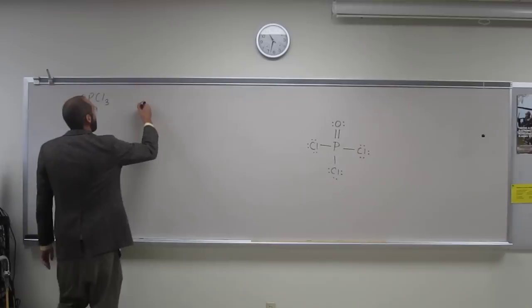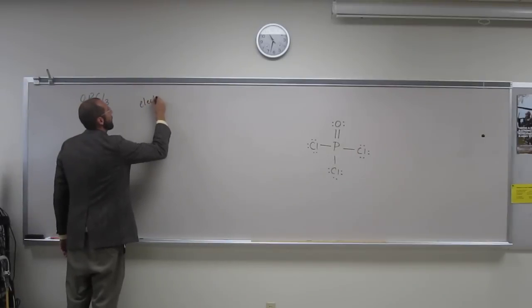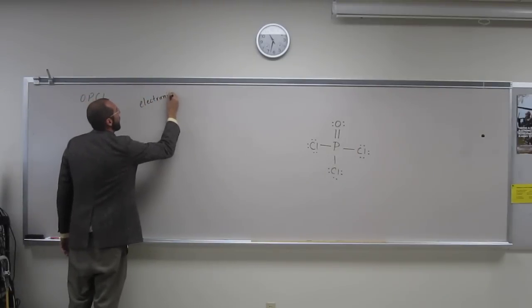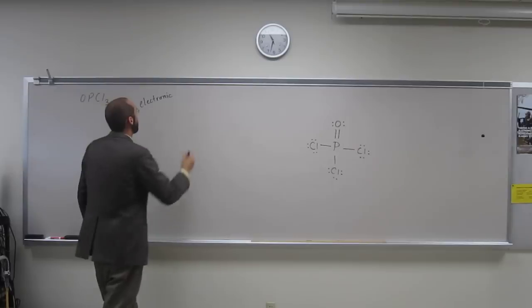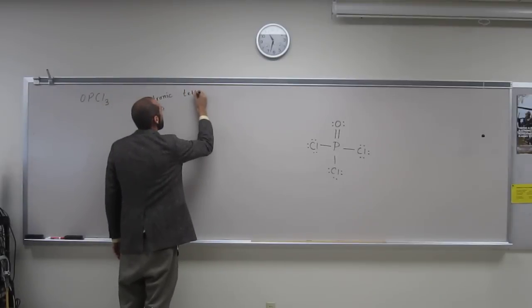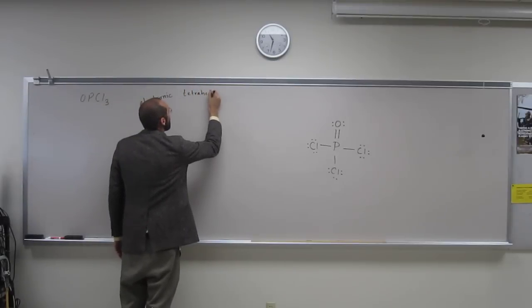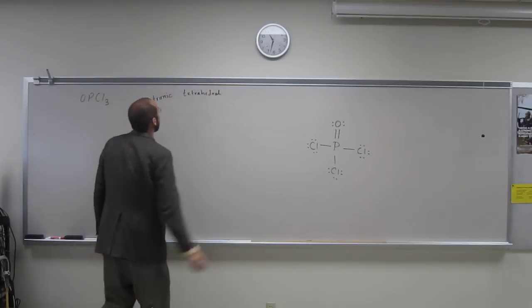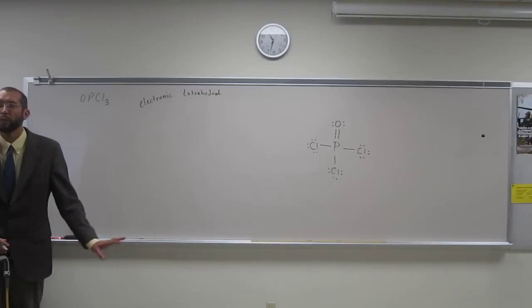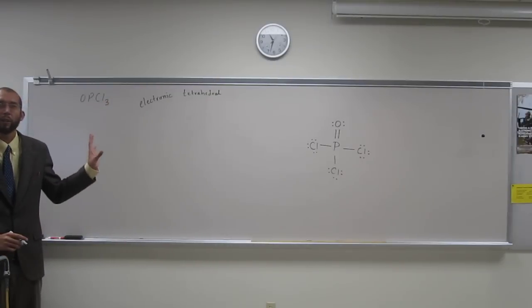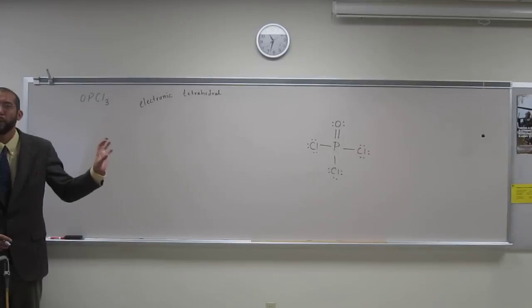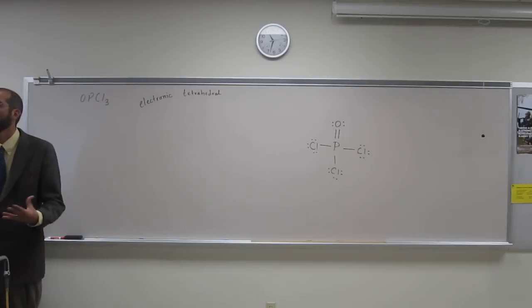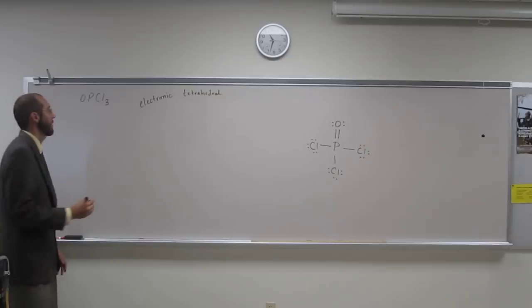So when we have four, the electronic structure is going to be what? Tetrahedral. Tetrahedral. Okay. And are all four of those electron density groups bonds? Yes. Yeah. So what would you expect the molecular geometry could be? Yeah, tetrahedral.